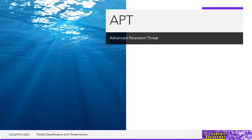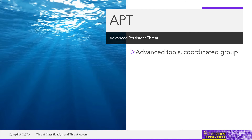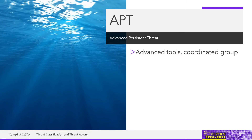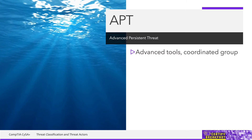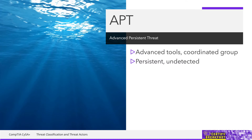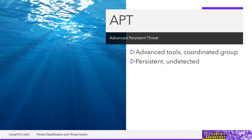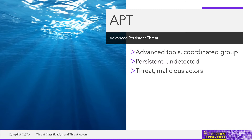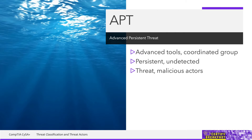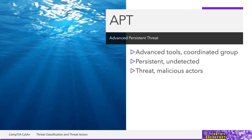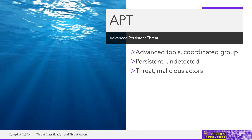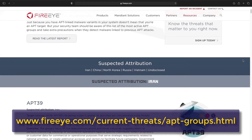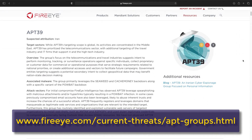Lockheed Martin introduced this term. A stands for advanced — meaning targeted, coordinated, purposeful, possibly using custom tools we haven't seen before. P is persistent — the intrusion is designed to remain undetected for months, even years sometimes. And T stands for threat — the person or group that has malicious intent, the opportunity, and the capability to execute it. You can look over the list from FireEye of currently known and self-identified APT hacker groups around the world.